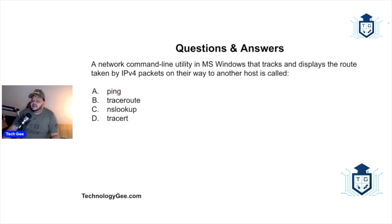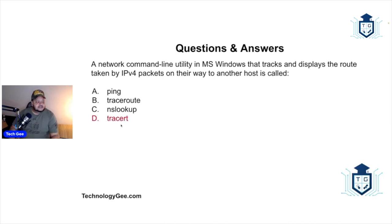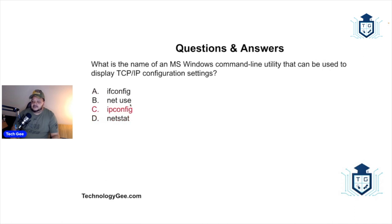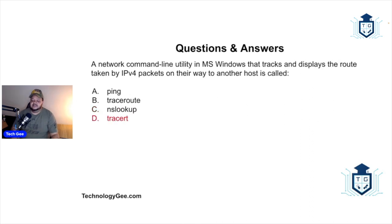A network command line utility in Microsoft Windows that tracks and displays the route taken by IPv4 packets on their way to another host is called what — ping, traceroute, nslookup, or tracert? The correct answer is tracert. The reason traceroute appears twice is that tracert is how you type the command in Windows, while traceroute is how you type it on Mac. Also remember: ipconfig is the Windows command for TCP/IP settings, while ifconfig is used on Mac and Linux.